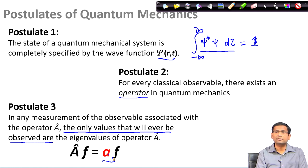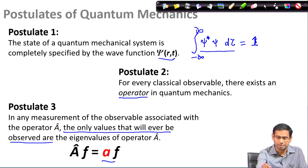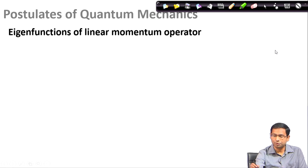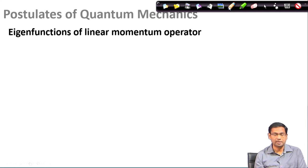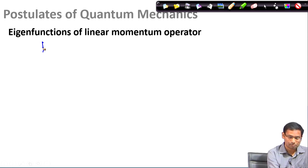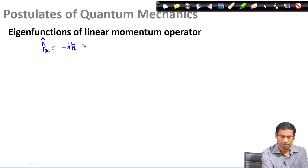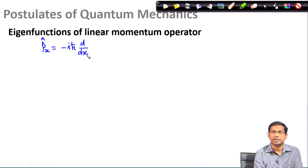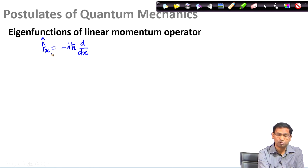Therefore, in our discussion the eigenfunctions and eigenvalues are very crucial. So we will spend some time finding out how we can determine the eigenfunctions of different operators. The first example we will look at is how we can get the eigenfunctions of the linear momentum operator, in this case p_x. The operator is given as p_x — if you remember, the functional form of the operator is minus i h-bar times d by dx, where i is the imaginary unit and h-bar is Planck's constant divided by 2 pi.